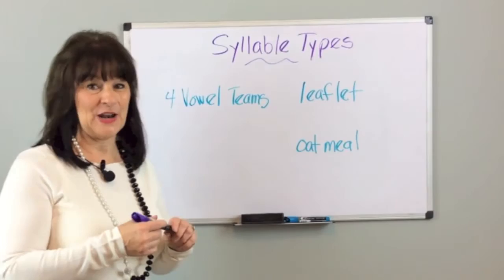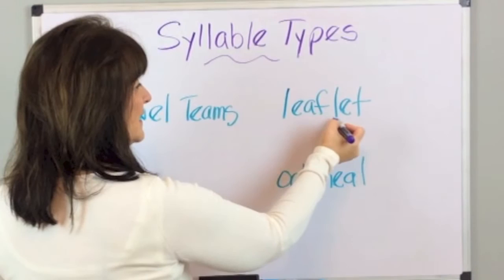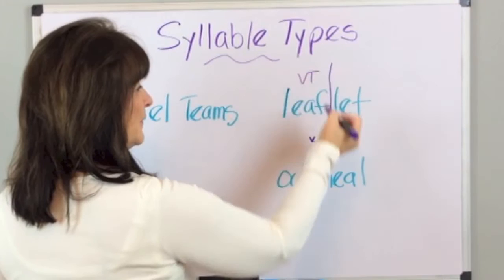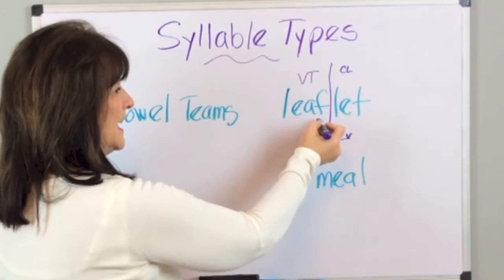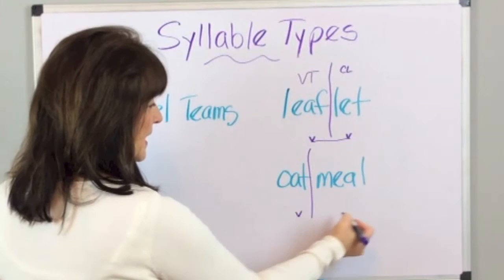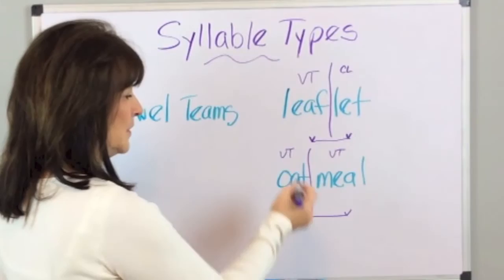Let's try leaflet and oatmeal. In leaflet, you have a vowel team EA and a single vowel. Divide the word at the vowel-consonant-consonant-vowel, look for your vowel team and your other vowel, draw your bridge — you have VT for vowel team and a closed syllable — and you pronounce this with a long E and short E: leaflet. For oatmeal, divide at the vowel-consonant-consonant-vowel, draw your bridge — you have a vowel team for a long vowel sound and another vowel team for a long vowel sound — so you have: oatmeal.